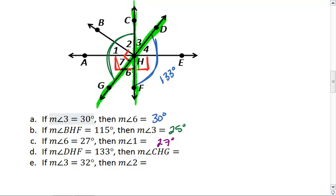Notice this gives me angle C-H-G. So my blue angle here and my green angle are vertical angles. If D-H-F is 133 degrees, then C-H-G is also 133 degrees.